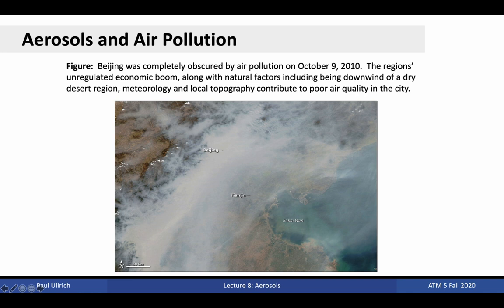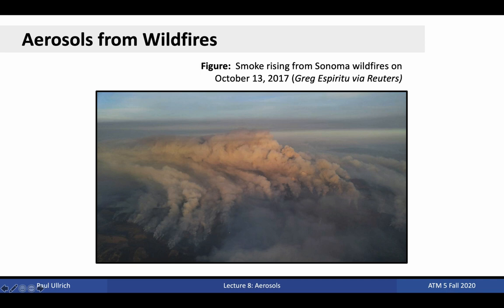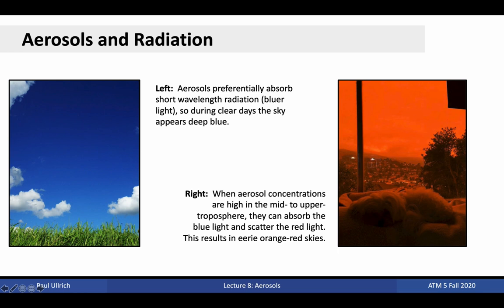As we've experienced over the past several years in California, wildfires are a common source of smoke aerosol pollution. Smoke is seen here rising from the Sonoma wildfires on October 13, 2017. Wildfires produce two kinds of aerosols relevant to the climate system: organic carbon and black carbon. The relative concentration of each is dependent on the type of vegetation being burned. Wildfire smoke, when wafted into the mid to upper troposphere, can impact radiative transfer in the atmosphere. These aerosols impact absorption and scattering properties across wavelengths and can drive the occurrence of orange or red skies. Aerosols preferentially absorb shorter wavelength radiation such as blue light, leaving behind more orange or red radiation. If the aerosols are close to the ground, the environment feels smoky and gray, but if the aerosol layer is aloft with relatively clear air beneath, the results are visibly striking.